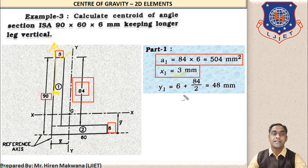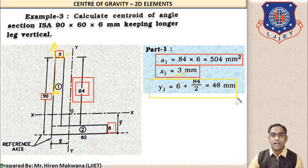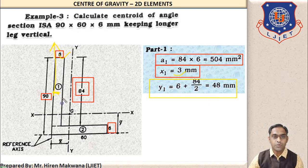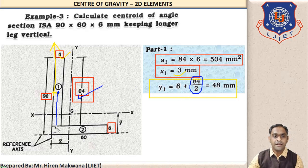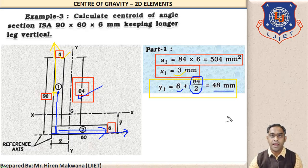Now let us calculate y1. y1 is the center of gravity of part 1 measured from the bottom x-axis. The center of the rectangle is at 84/2 = 42 mm from the base of part 1. We then add the 6 mm base portion to reach the x-axis, so y1 = 42 + 6 = 48 mm. This completes the calculation for part 1.